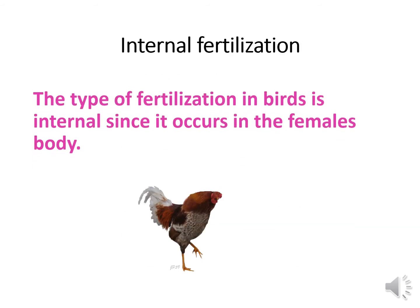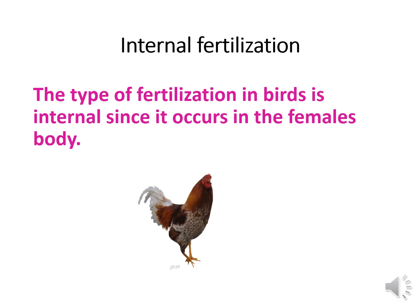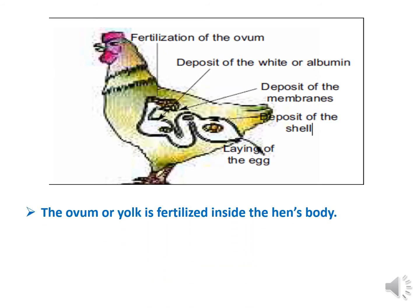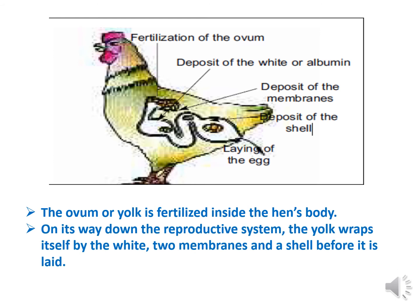The type of fertilization in birds is internal, since it occurs inside the female's body. The ovum produced by the hen — also called the yolk — is fertilized inside the hen's body as it travels down the reproductive system.